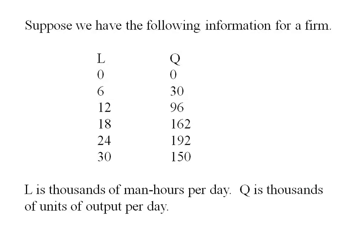Here we've got some information for this firm. We've got L which is thousands of man-hours per day and Q is thousands of units of output per day.